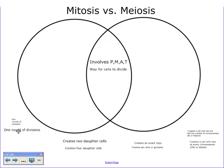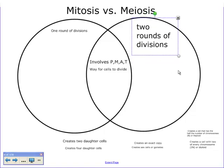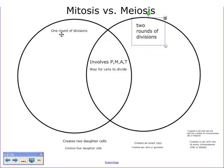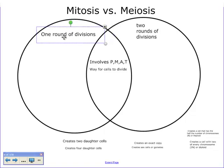One of the biggest differences between mitosis and meiosis is the number of divisions. For mitosis we have one round of divisions, and for meiosis we have two rounds of divisions — we talked about that previously.